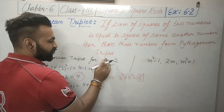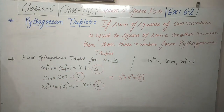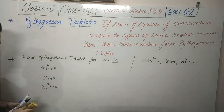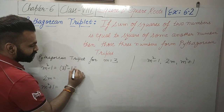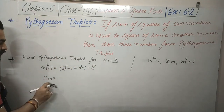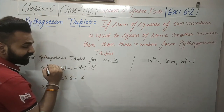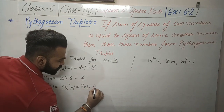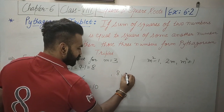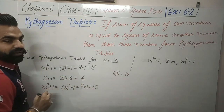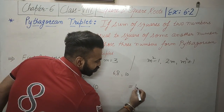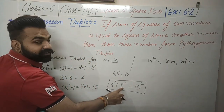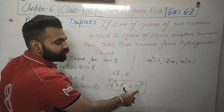Find the Pythagorean triplet for M equals 3. First number: M squared minus 1 equals 3 squared minus 1 equals 9 minus 1 equals 8. Second: 2M equals 2 into 3 equals 6. Third: M squared plus 1 equals 3 squared plus 1 equals 9 plus 1 equals 10. So the three numbers are 8, 6, and 10, where 10 is the largest. We verify: 6 squared plus 8 squared equals 36 plus 64 equals 100, which equals 10 squared.